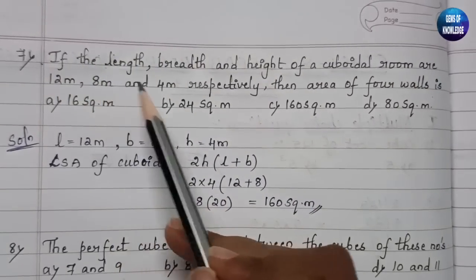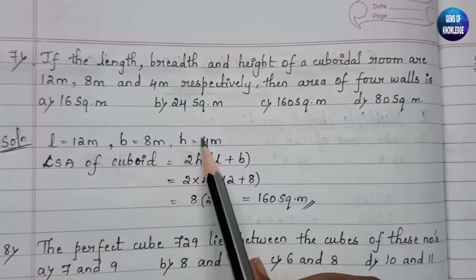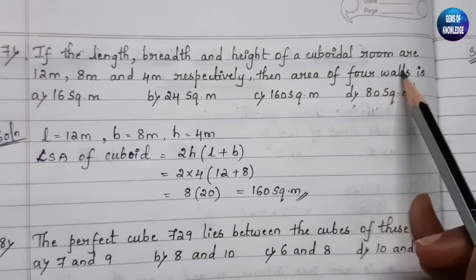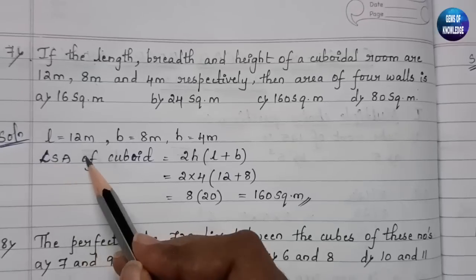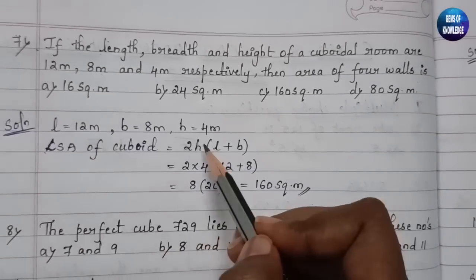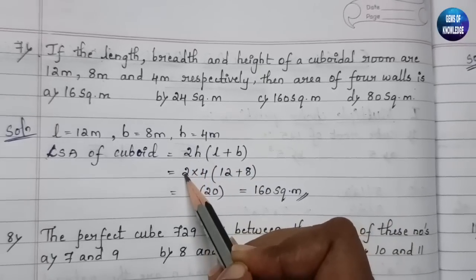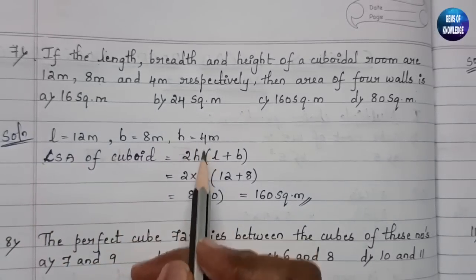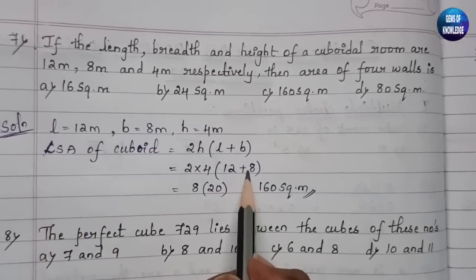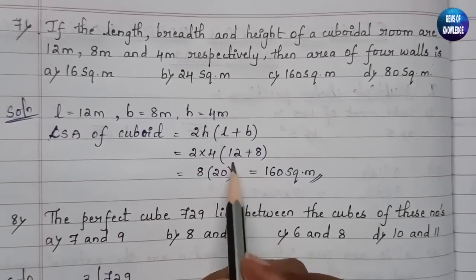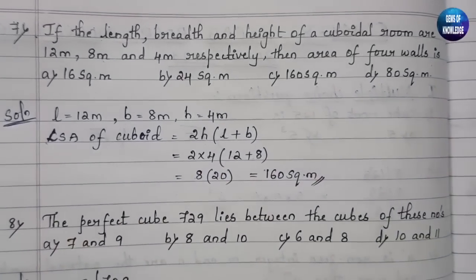The seventh question: a cuboidal room has length = 12 m, breadth = 8 m, and height = 4 m. Find the area of 4 walls, which means the lateral surface area (LSA). The formula is LSA = 2h(l + b). Substituting: 2 × 4 × (12 + 8) = 8 × 20 = 160 square meters.